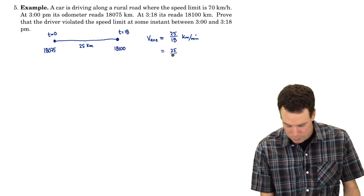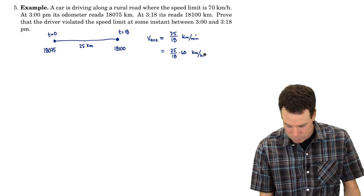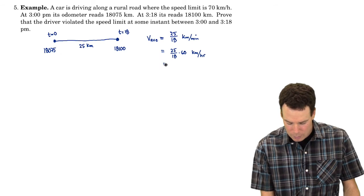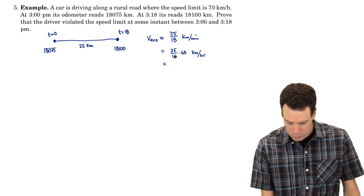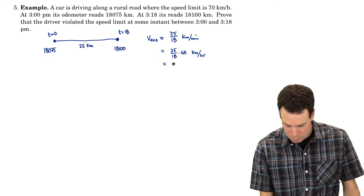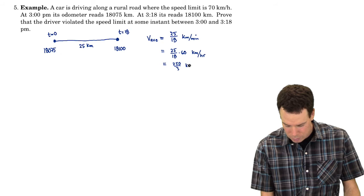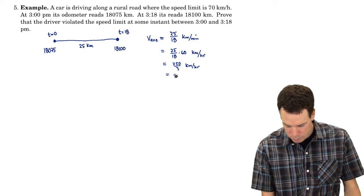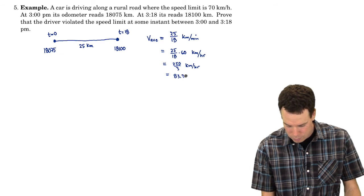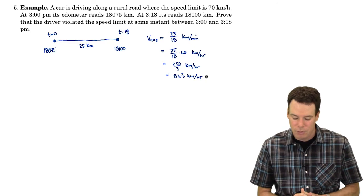This would be 25 divided by 18 times 60, because there's 60 minutes in an hour. So that's kilometers per hour. I can factor the 18 as 3 times 6 and then cancel 6, so this would be 250 divided by 3 kilometers per hour, or 83 and a third kilometers per hour. So that's my average velocity, 83.3 km/h.